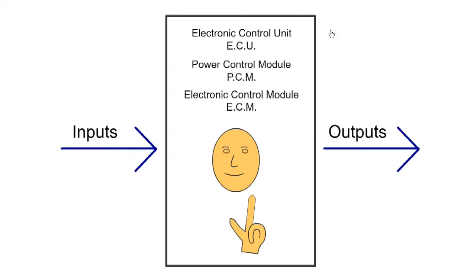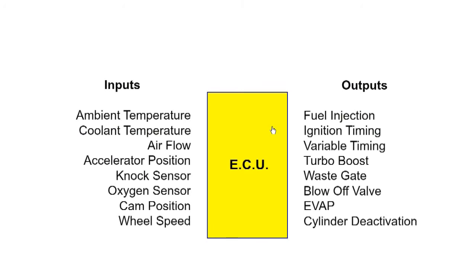The ECU is the electronic control unit, sometimes called the PCM (power control module) or ECM (electronic control module). It's the brain that does the thinking. It works in a harsh environment and is subjected to temperature variations, electromagnetic fields, and high vibration.